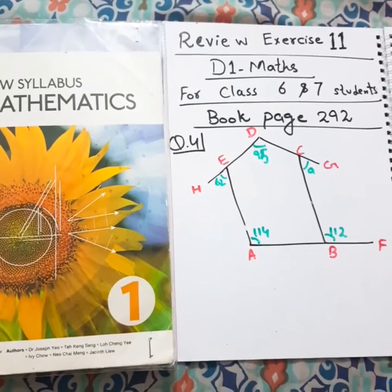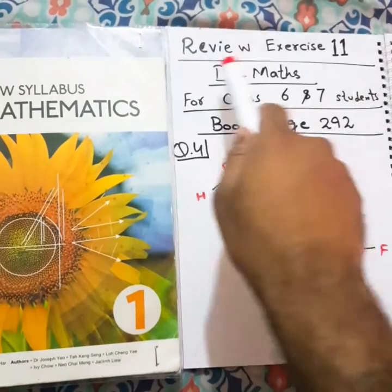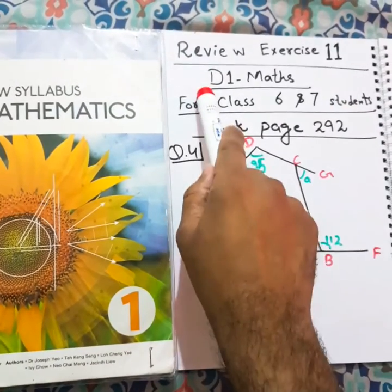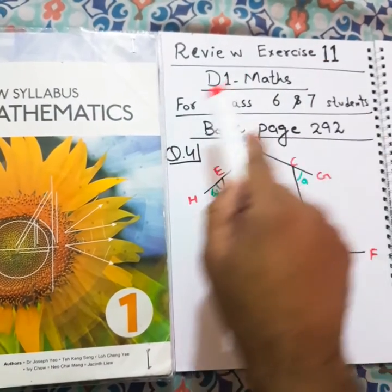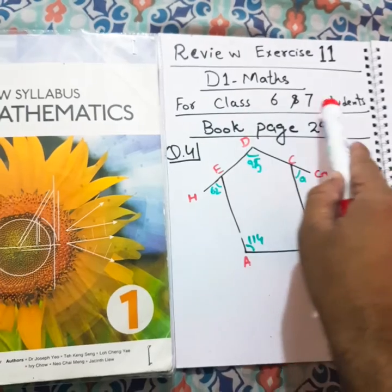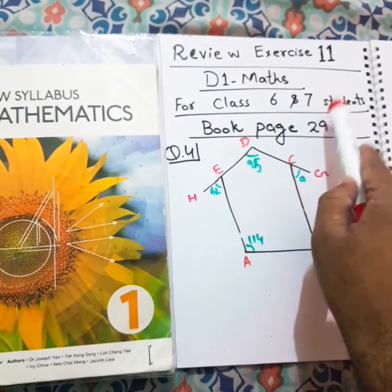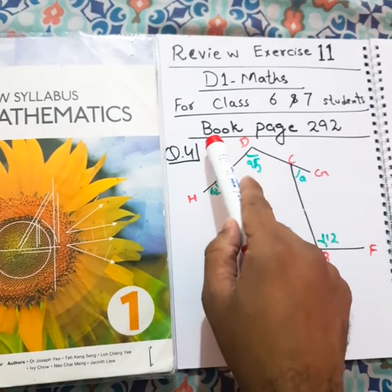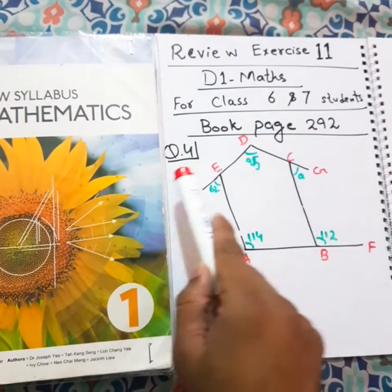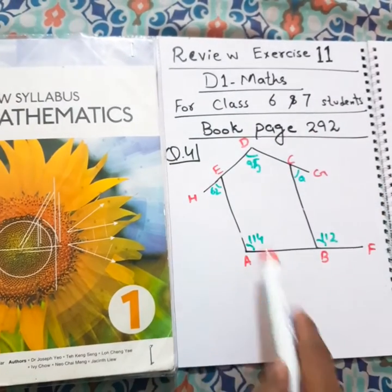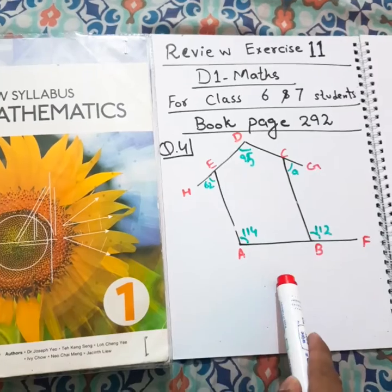Hello, Assalamu alaikum students. This is D1 Maths Review Exercise 11 for class 6 and 7 students. Book page number 292, question number 4, part A.